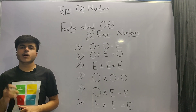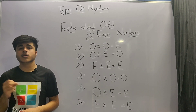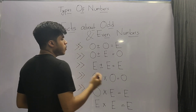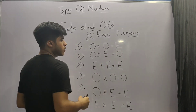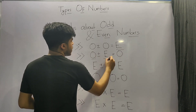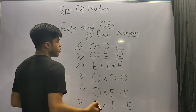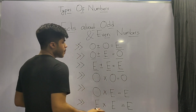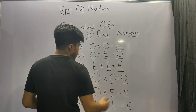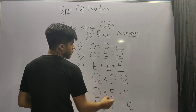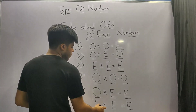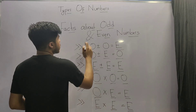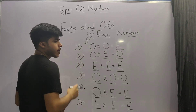There are certain facts about odd and even numbers that you should remember to solve questions faster. If you add or subtract 2 odd numbers, you will always get an even number. If you add or subtract an odd number and an even number, you will always get an odd number. If you add or subtract 2 even numbers, you will always get an even number. If you multiply 2 odd numbers, you will always get an odd number. If you multiply an odd number with an even number, you will always get an even number. And if you multiply 2 even numbers, you will always get an even number.